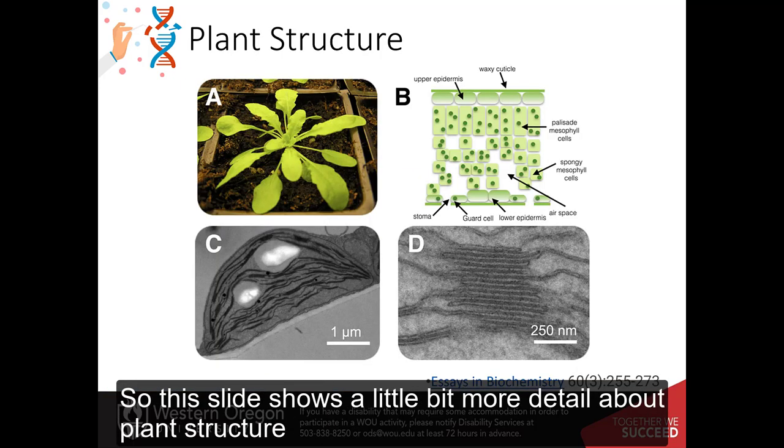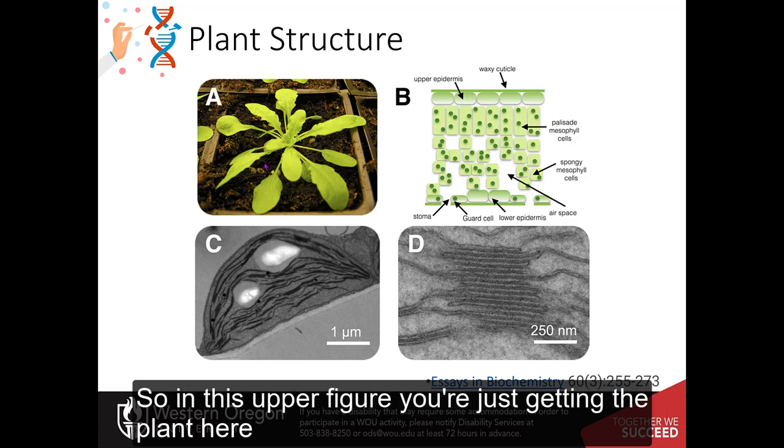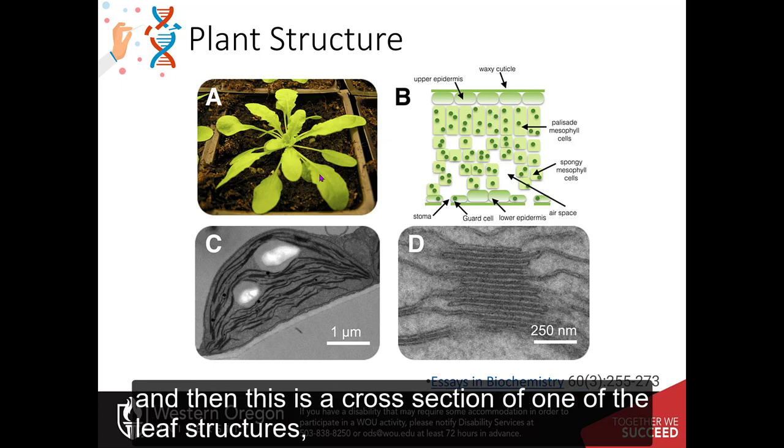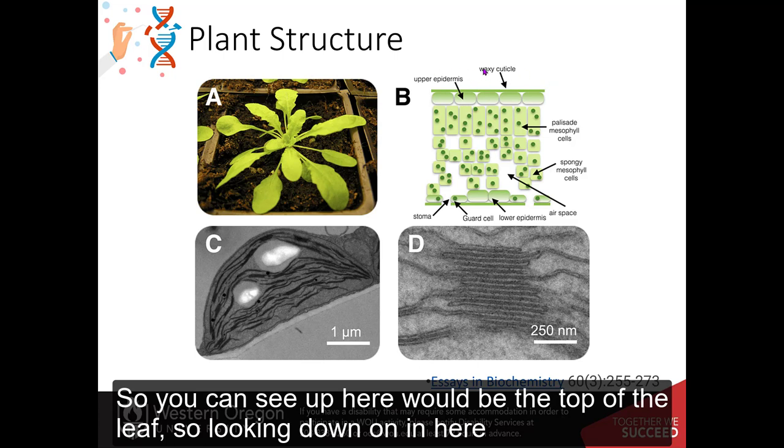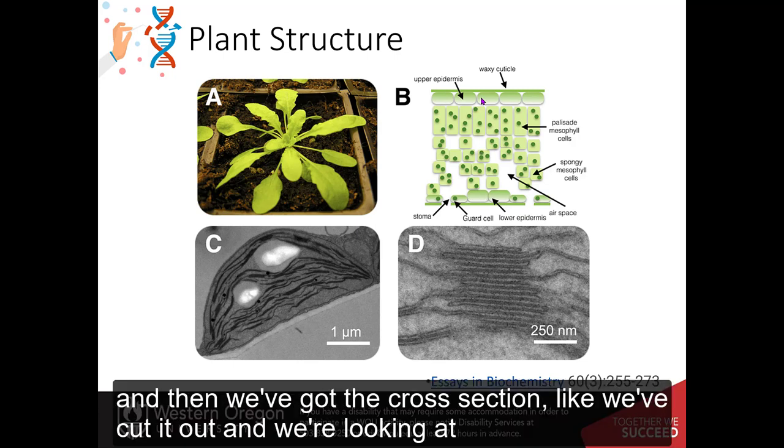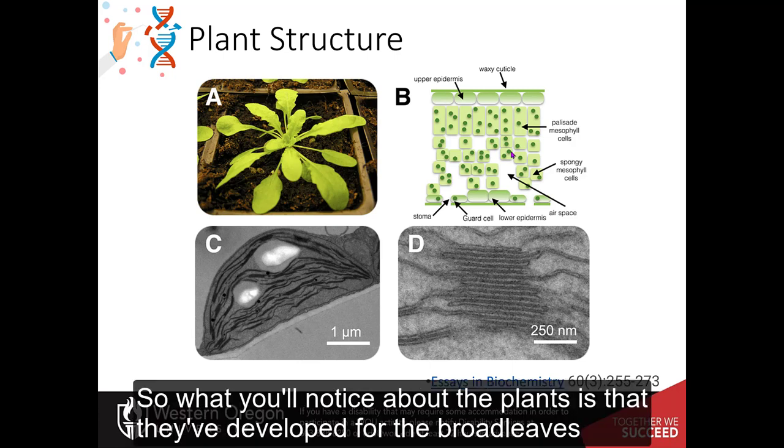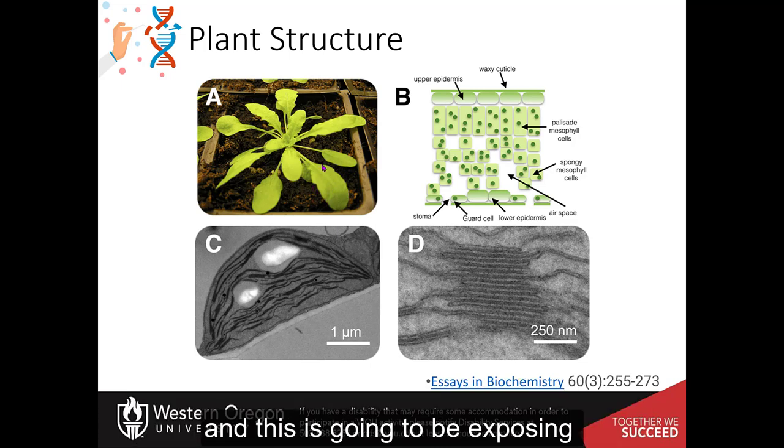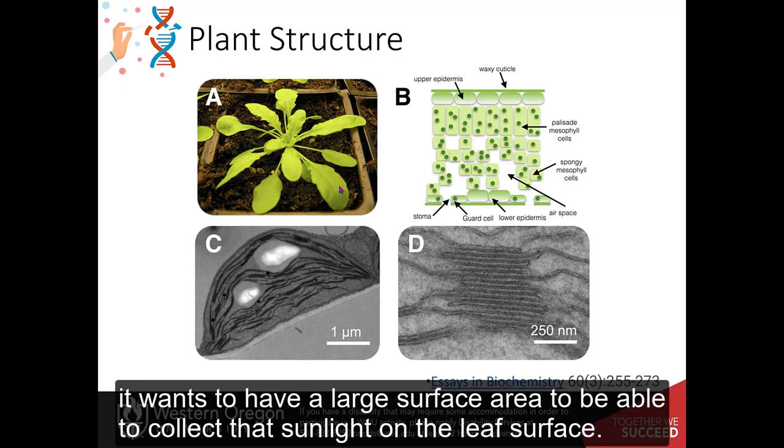So this slide shows a little bit more detail about plant structure. So in this upper figure, you're just getting the plant here. And then this is a cross-section of one of these leaf structures. So you can see up here would be the top of the leaf, so looking down on it here. And then if we could look at the underside of the leaf, that would be down here on this bottom part. And then we've got the cross-section, like we've cut it out, and we're looking at the cells in between. So what you'll notice about the plants is that they've developed very broad leaves. And this is going to be exposing that leaf surface to the sunlight. So it wants to have a large surface area to be able to collect that sunlight on the leaf surface.